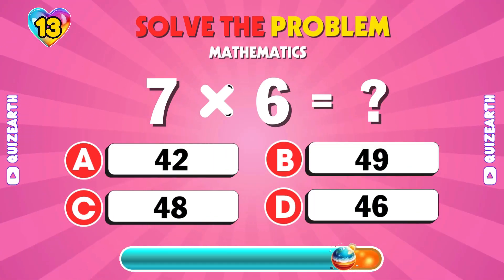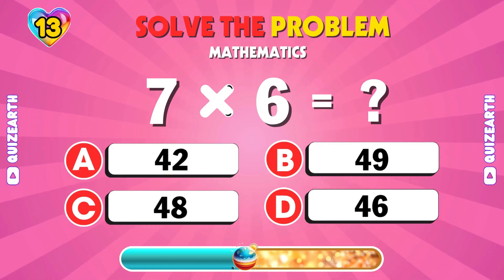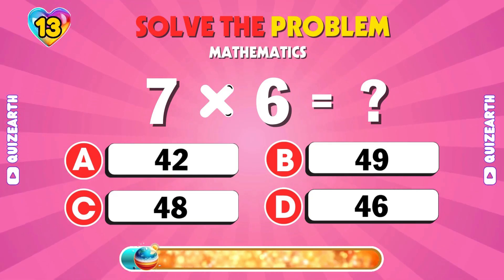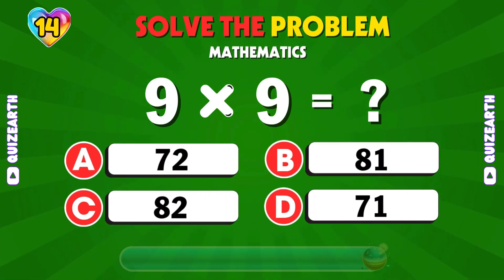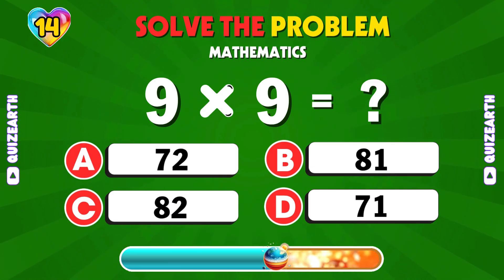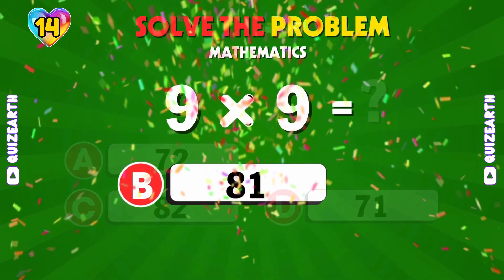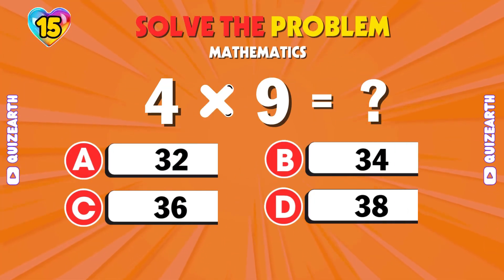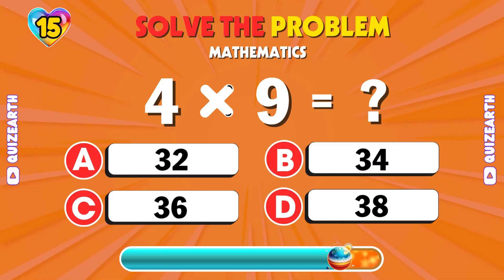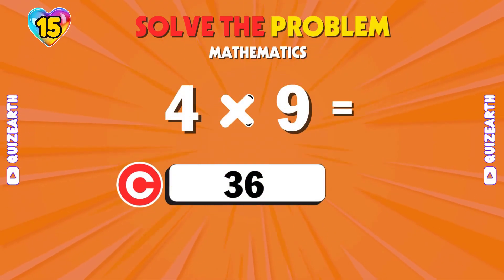Say it loud. 7 times 6? 42. How about this? 9 times 9? It's 81. Next one up. 4 times 9? Final call, 36.